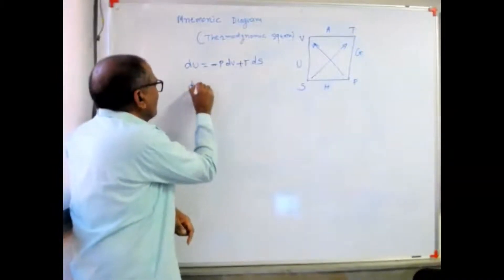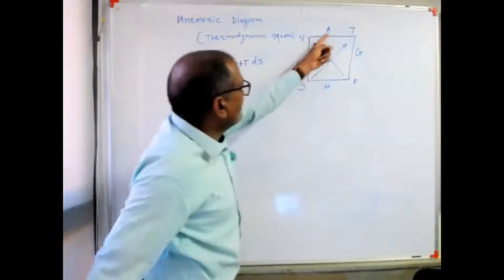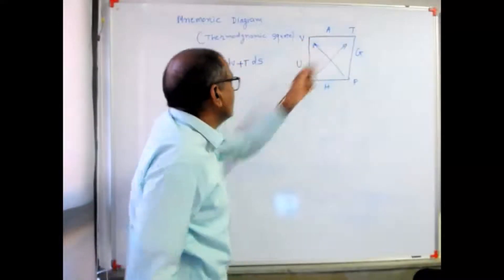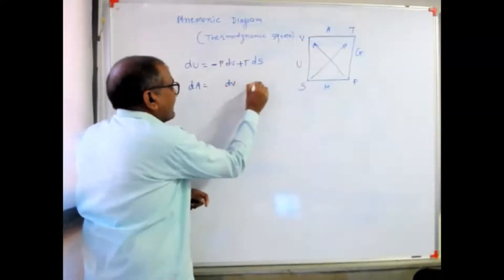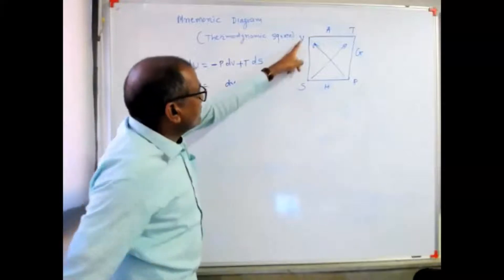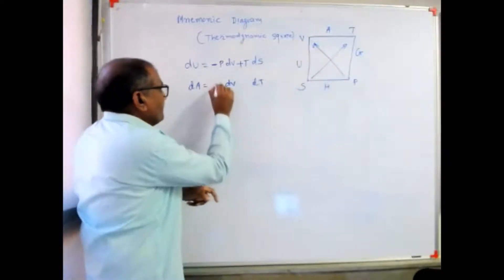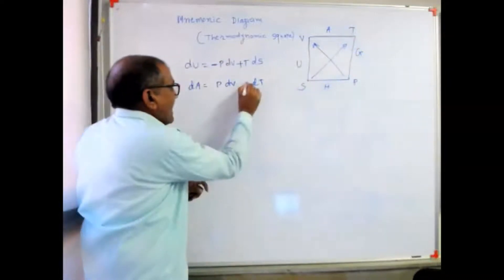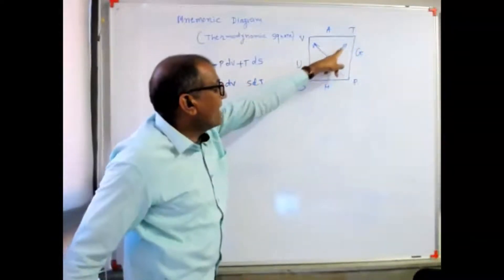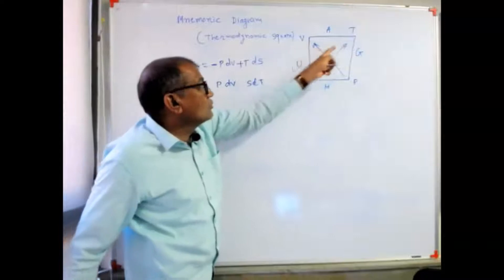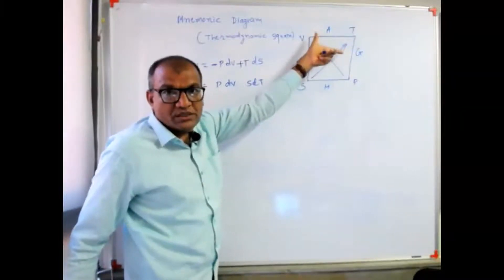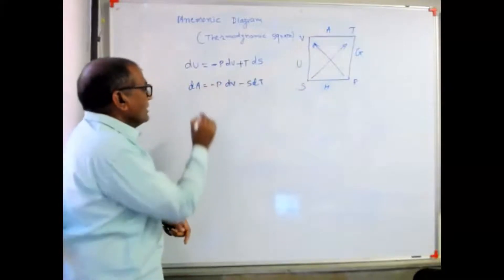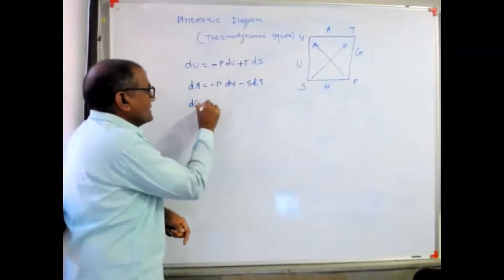If I write the equation for dA, the Helmholtz free energy, there are two differential variables: dV and dT. The coefficient for dV is P, and the coefficient for dT is S. In both cases, the arrows are pointing towards the variable, not away from it. So both signs will be negative.